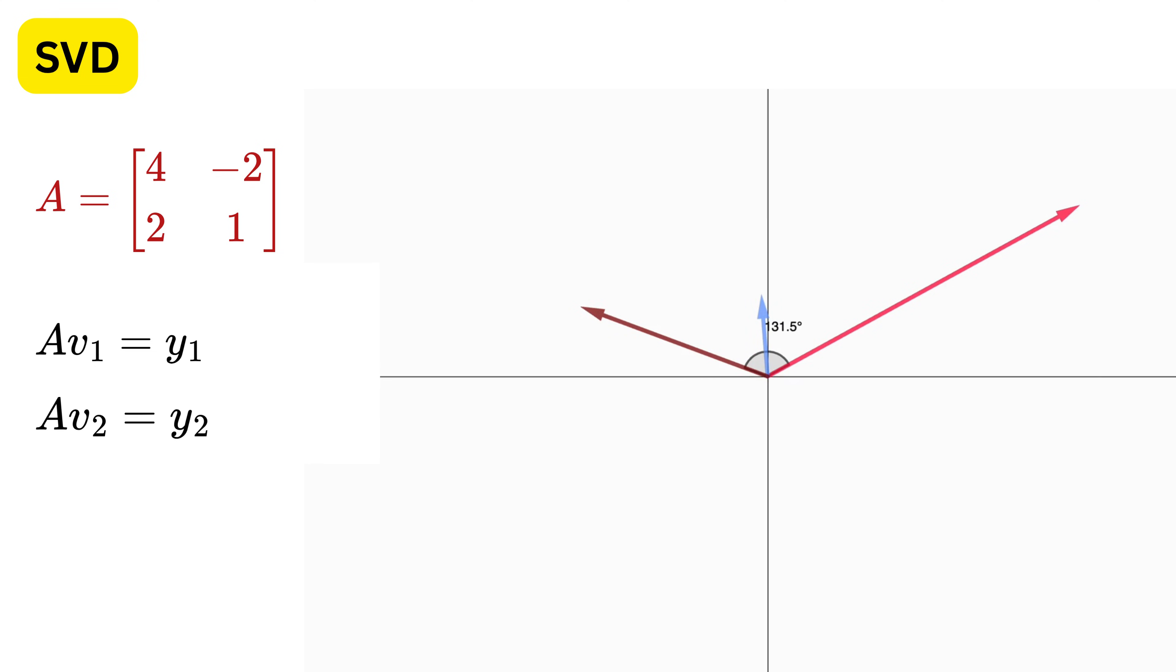For the time being, let me hide V1 and V2 and only show the transformed vectors. We can clearly see that at this orientation, the angle between Y1 and Y2 is around 90 degrees, which means for this value of V1 and V2, both the transformed vectors are orthogonal.